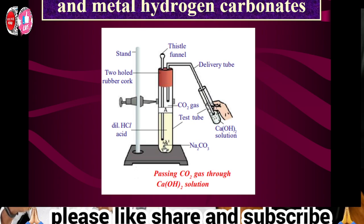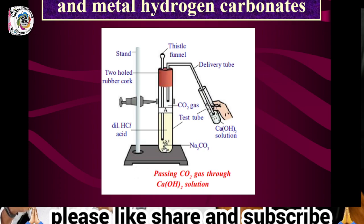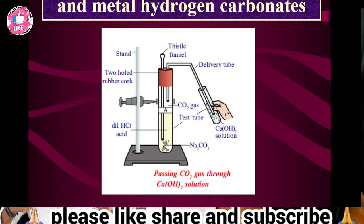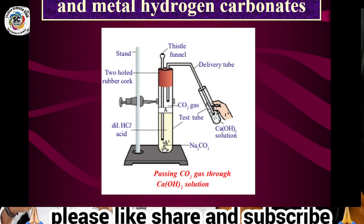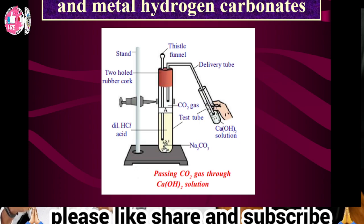Fix the test tube to the stand and add some sodium carbonate in the test tube. Add diluted HCl to it. Then add a two-hole rubber cork and fix it. One hole is fixed with a glass funnel, and the second hole is inserted with a delivery tube.